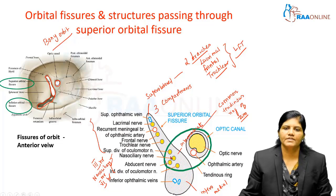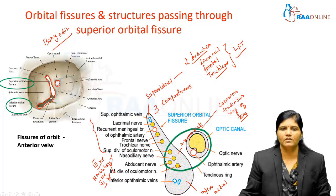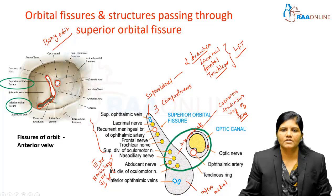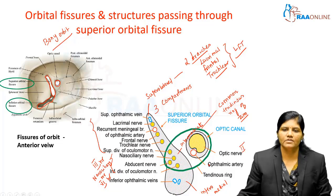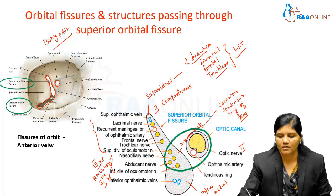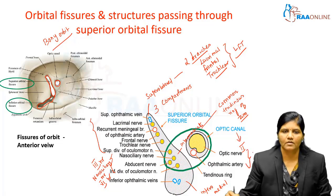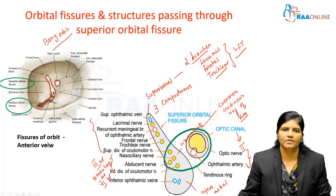That covers the schematic diagram showing the structures passing through the superior orbital fissure. Now we can see the optic canal, which is a bony canal. The optic canal transmits the optic nerve — the second cranial nerve — and inferiorly, the ophthalmic artery. To summarize: the superior orbital fissure transmits branches from the third, fourth, and sixth cranial nerves, while the second cranial nerve passes through the optic canal.